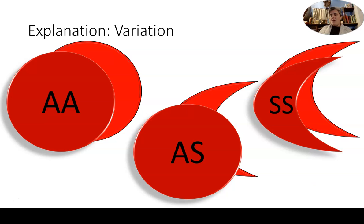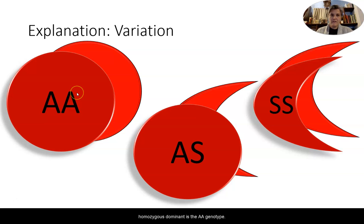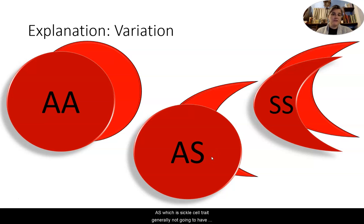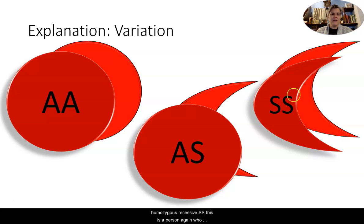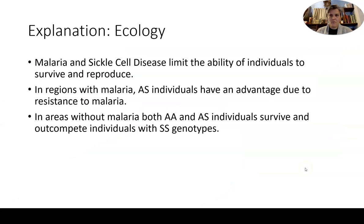Putting our explanation together, there are three variations. The homozygous dominant AA genotype produces normal, healthy hemoglobin proteins for red blood cells. The heterozygous AS is sickle cell trait — generally no symptoms unless in a low-oxygen environment. Finally, sickle cell disease is the phenotype for the homozygous recessive SS genotype. For the ecology, malaria and sickle cell disease both limit the ability of an individual to survive and reproduce.